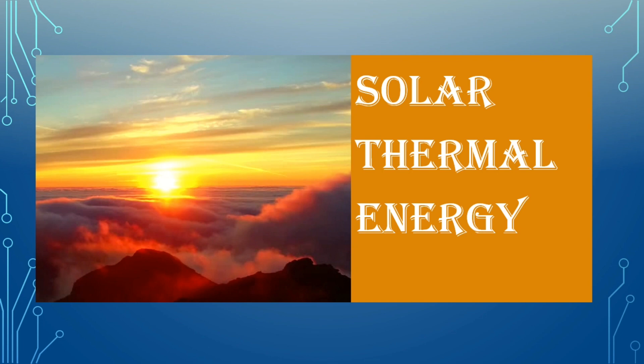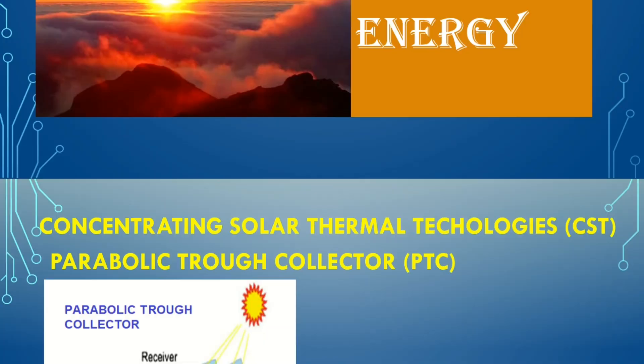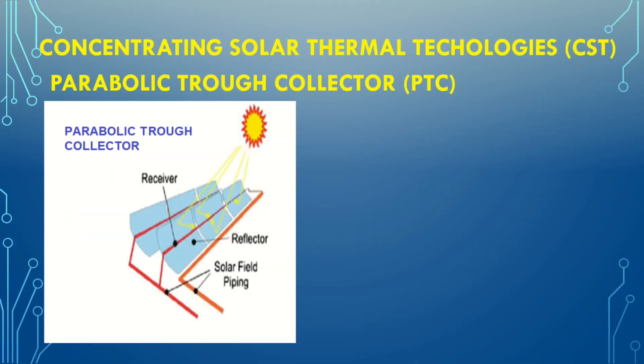Solar power can be converted into electricity by either of its two components — light energy or heat energy. For light energy we use photovoltaic panels, and for heat energy we will discuss some technologies here. These technologies are called concentrating solar thermal technologies, or CST.